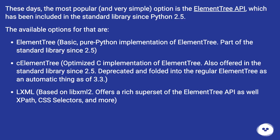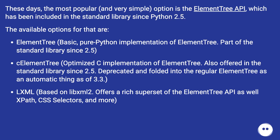cElementTree is the optimized C implementation of ElementTree, also offered in the standard library since 2.5, deprecated and folded into the regular ElementTree automatically as of Python 3.3. LXML, based on libxml2, offers a rich superset of the ElementTree API as well as XPath, CSS selectors, and more.